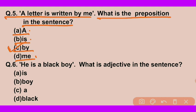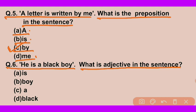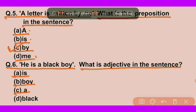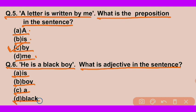Question number six: 'He is a black boy' — what is the adjective in this sentence? Is verb है, boy noun है, a article है। 'Black' — यह boy की विशेषता बता रहा है, तो यह adjective है। D option — black — सही है।